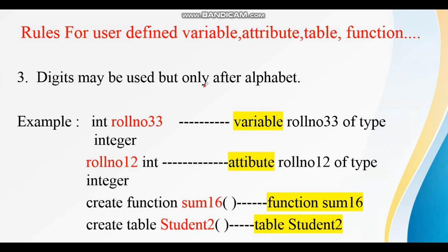The third rule: digits may be used, but only after an alphabet. We can make use of digits, but only after the alphabet. For example, 'rule_number33' — the digits 33 come after the characters. Likewise, an attribute can have digits like 1 and 2, but again only after the alphabet. For function names and table names as well, digits are allowed, but only after alphabets. The digits can also appear somewhere in the middle.